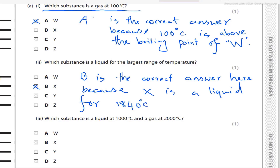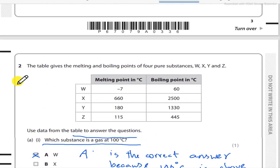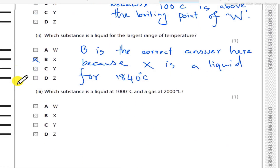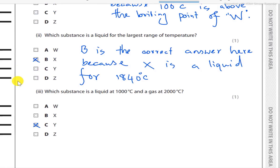Which substance is liquid at 1000 degrees Celsius and gas at 2000 degrees Celsius? The answer is substance Y, option C, because Y's boiling point falls between 1000 and 2000 degrees Celsius, meaning it is liquid at 1000°C and gas at 2000°C. So C is the correct answer.